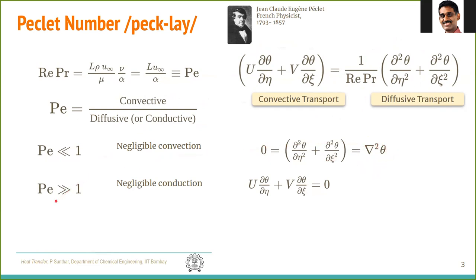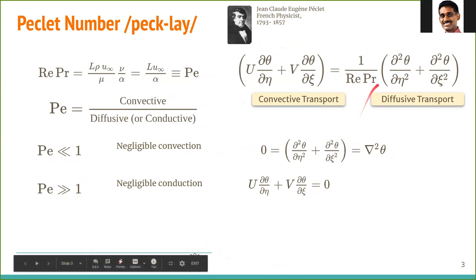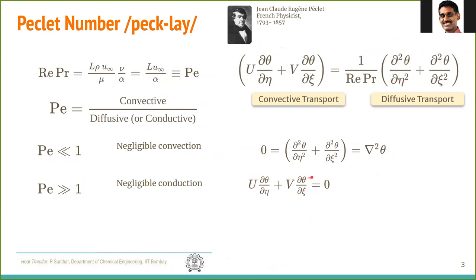On the other limit, when Péclet is very large, convection dominates diffusion. The diffusive right-hand side goes to zero and we have only convective transport of heat. This is a very idealized case, because whenever you have an interface between solid and fluid, there will always be finite conduction in the thermal boundary layer.